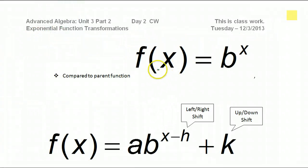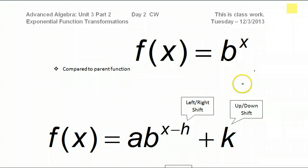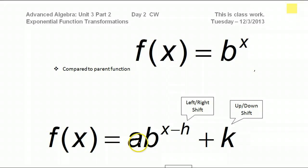If we look at the parent function b to the x power, that's your basic exponential function, so we call it the parent function. We want to learn what happens when we make certain changes — what happens if we add or subtract something to the exponent, what happens when we add or subtract a number at the very end, what happens when we multiply by a number in the front. In other words, what will be the effect of a, h, and k on the parent function? These changes are called transformations.